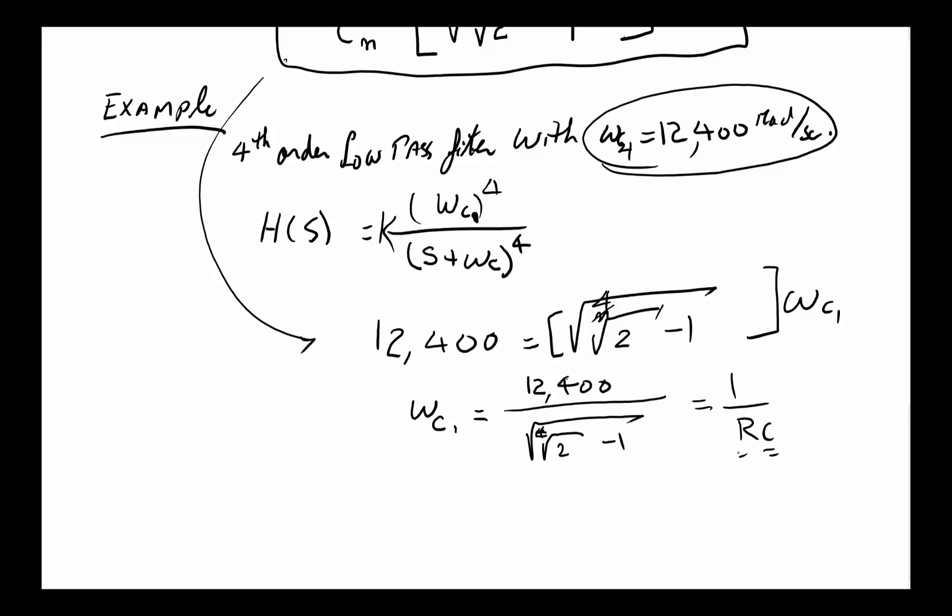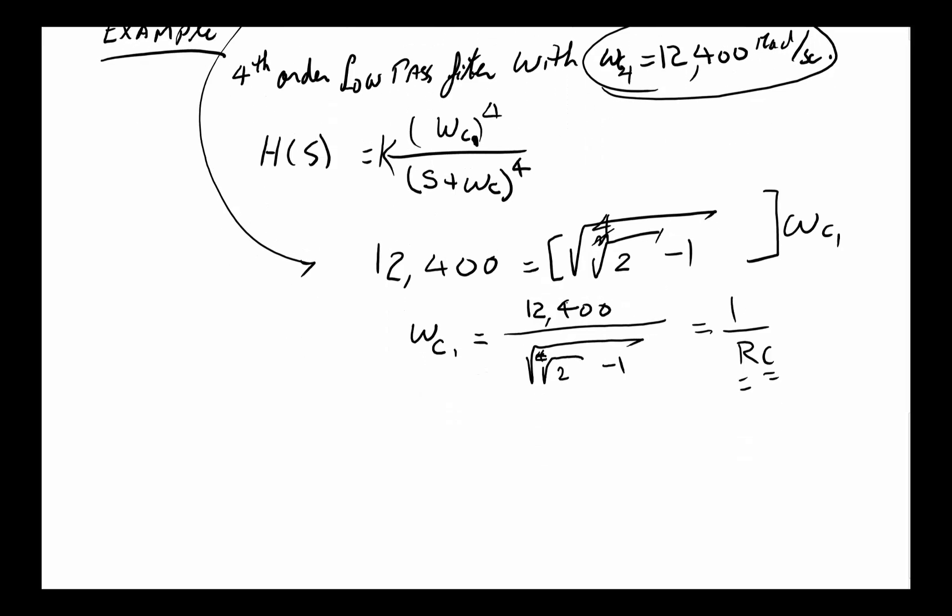then we know for a low-pass filter this is equal to 1 over RC. We can pick our R, pick our C, and literally design the one stage. So we'll design it, and then we will have four of these low-pass filters in a row, in cascade form series, and that would give us what we're looking for. This would be V_in, that would be V_out.